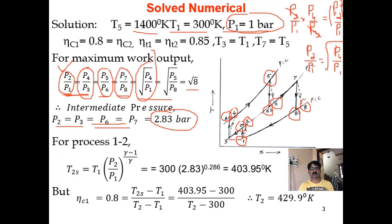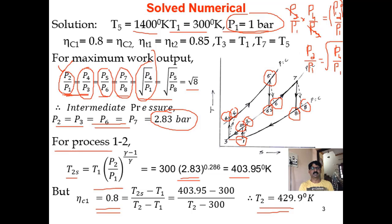Now let us begin calculations. For process 1 to 2S, isentropic compression: T2s = T1 × (P2/P1)^((γ-1)/γ). With pressure ratio 2.83, you get T2s = 403.95 K. Using isentropic efficiency of compressor stage 1 equal to 0.8, the actual temperature at end of first stage compression T2 = 429.89 K.